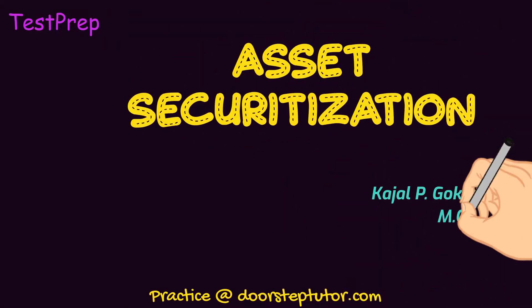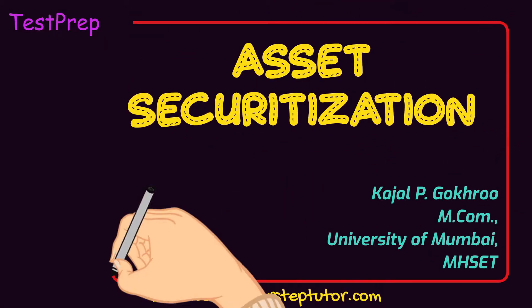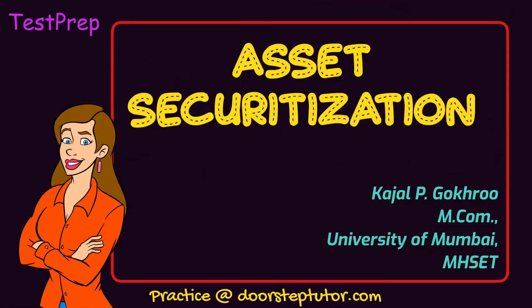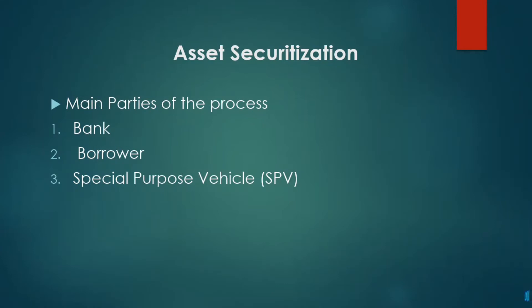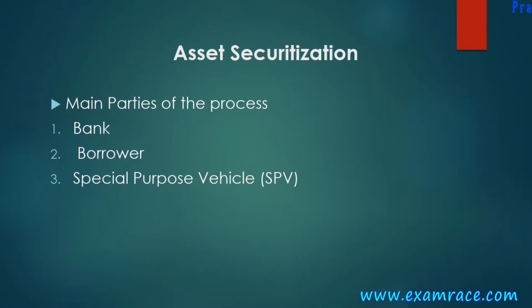Let us understand the process of asset securitization. Asset securitization mainly involves three parties: first is the bank, the borrower, and the special purpose vehicle.